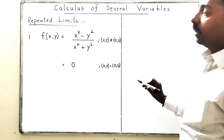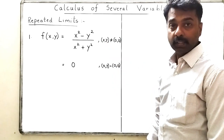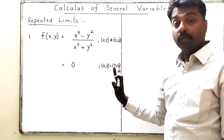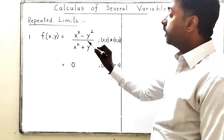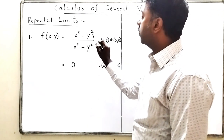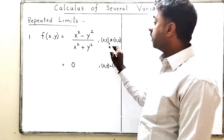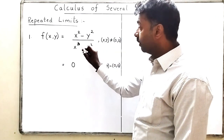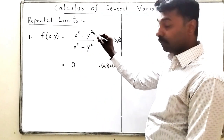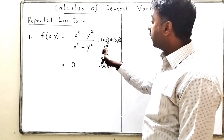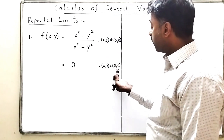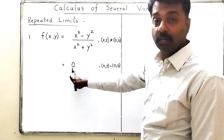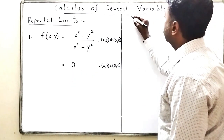In this lecture we are going to discuss repeated limits and take 3 to 4 problems so the concept will be very clear. The function is f(x,y) = (x² - y²)/(x² + y²) whenever x and y are not zero. If x and y are both zero, the denominator becomes zero, so we define f(0,0) = 0.